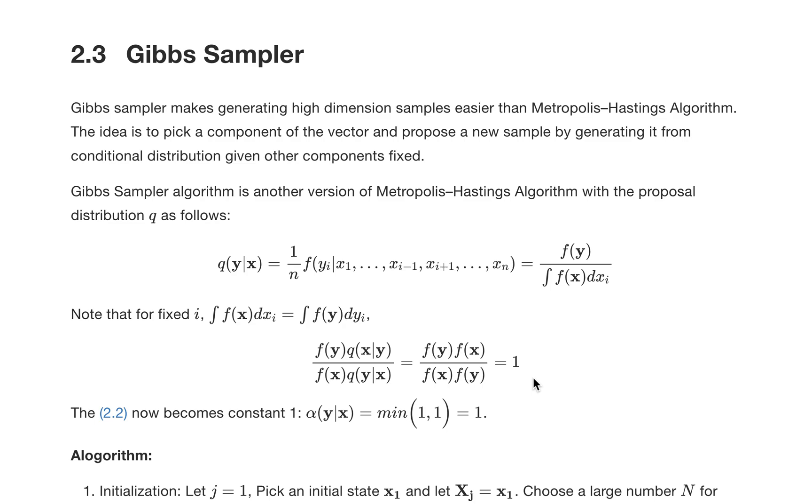The idea of the Gibbs Sampler is to pick one component from an n-dimensional random vector. Each time we're going to pick one of the components in that vector and propose a new sample specific for that component, keeping other components fixed.